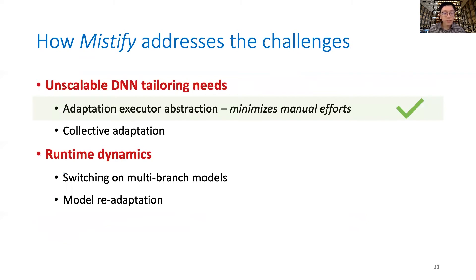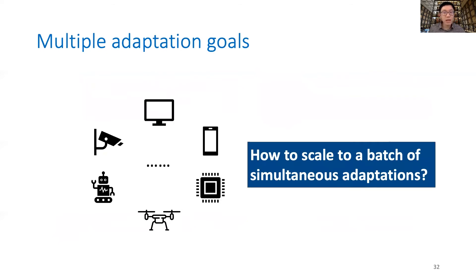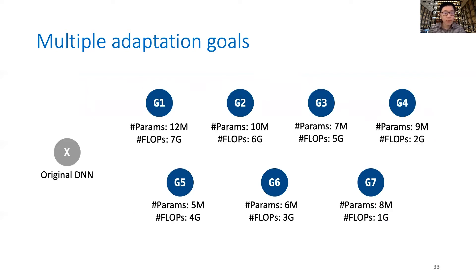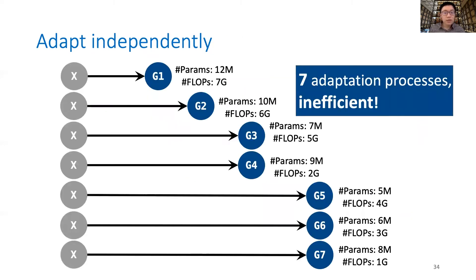Now we've explained how Mystify minimizes manual efforts with a new abstraction. A further question is: how do we make it scalable when facing hundreds or even more simultaneous adaptations? Suppose we have seven adaptation goals from G1 to G7, each with two constraints: number of parameters and number of operations. The naive solution is to adapt them individually — seven goals means seven adaptation processes, one for each. This is really inefficient, especially when there are a large number of goals waiting to be adapted.